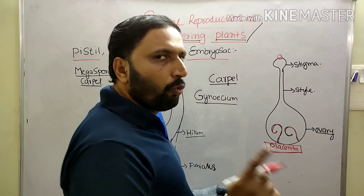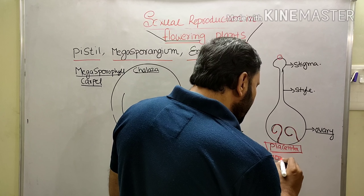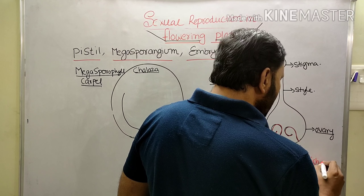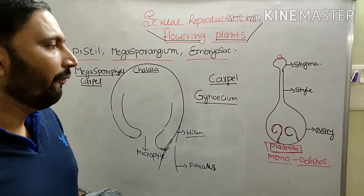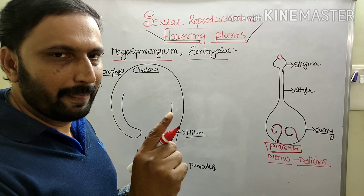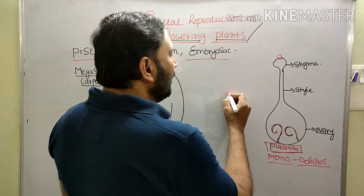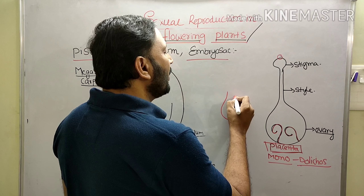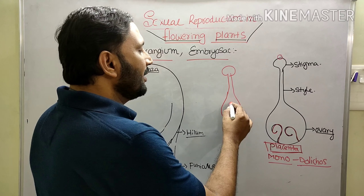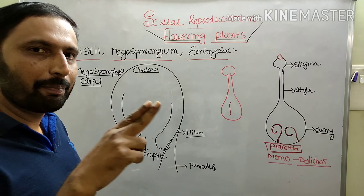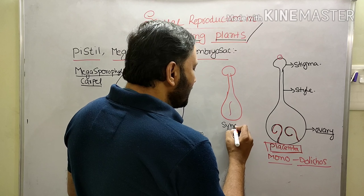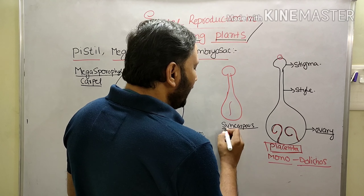When the gynoecium is made up of only one carpel, it is called Monocarpillary gynoecium — for example, Doris. When made up of two carpels, it is called Bicarpillary gynoecium. In Datura, the two ovaries are fused to form a single ovary, two styles fused into a single style, and two stigmas fused into a single stigma. This is Bicarpillary Syncarpous gynoecium — example: Datura. Syncarpous means the carpels are completely fused.